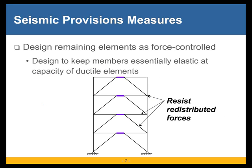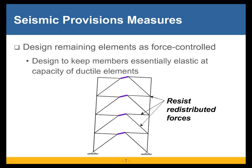Next, we design the remaining elements as force controlled. You design these elements to remain more or less elastic at the capacity of the ductile elements. So you determine what forces are in these so-called elastic members when the deformation controlled members reach their yielding strength, and you design these members to resist those forces. One of the key things to think about here is that this is a capacity analysis, and the distribution of forces in the inelastic state can be very different from those that come from an elastic analysis.